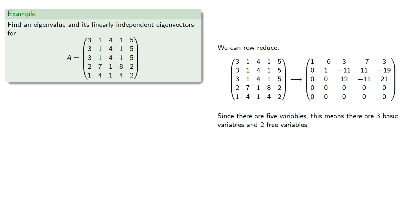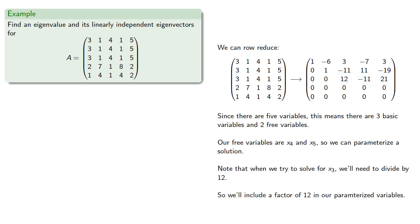Our free variables are x4 and x5, so we can parameterize a solution. And while we don't need to do so, notice that when we try to solve for x3, we'll need to divide by 12, so we'll include a factor of 12 in our parametrized variables. So we'll let x4 be 12s and x5 be 12t.